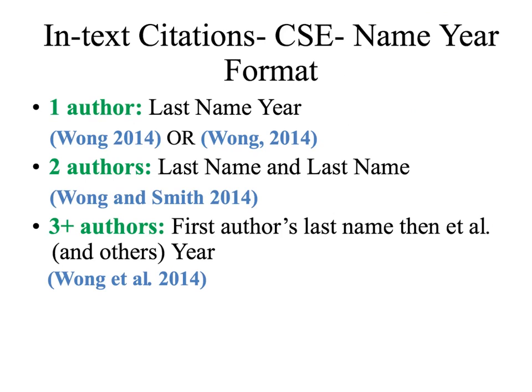The format for in-text citations differs a bit from APA format or other formats you may be familiar with. You basically include the name and the year of publication, and the comma between is optional, but keep it consistent throughout your paper. If you have a citation with two authors, you want to include both names with the word AND written between them. If there are more than three authors, you'll use the first author's last name and then et al., period, and the year.